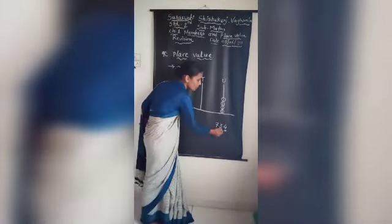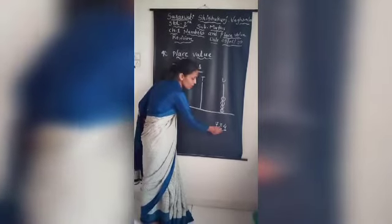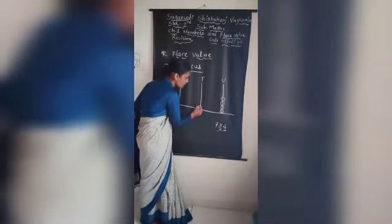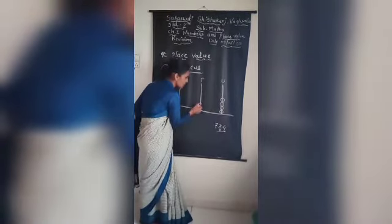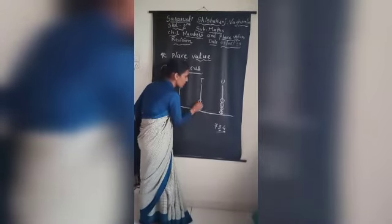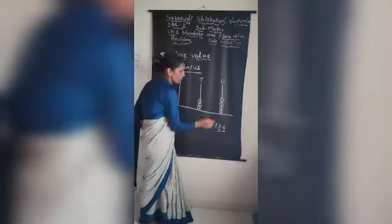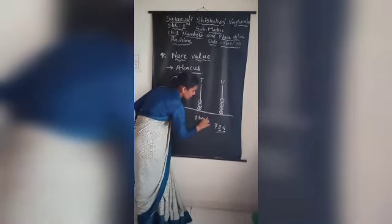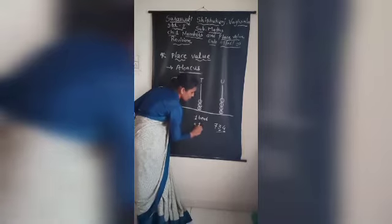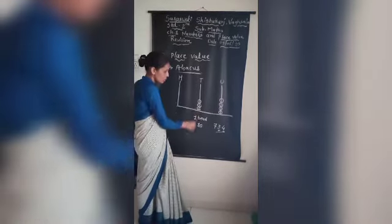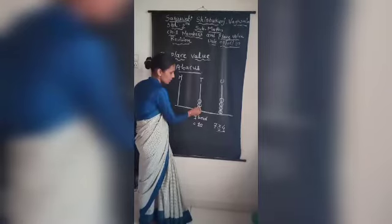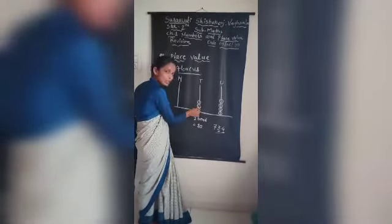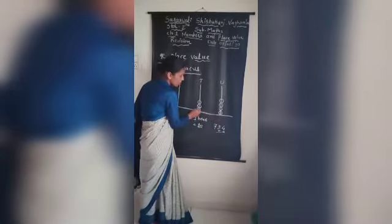The second digit is 3, and it is in the tens place, so it is not just 3 — it is 30. We draw three beads here because on the tens place, one bead is equal to 10. So: 10, 20, 30. This gives us 30, plus 4, equals 34.